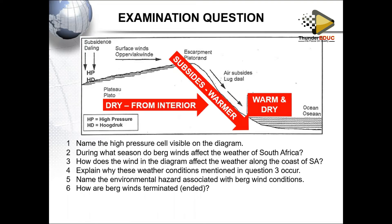Next question: during what season do berg winds affect the weather of South Africa? They occur mainly during winter. Next: how does the wind in the diagram affect the weather along the coast? As it descends over the coast it starts fires — wildfires that affect the coast of South Africa.